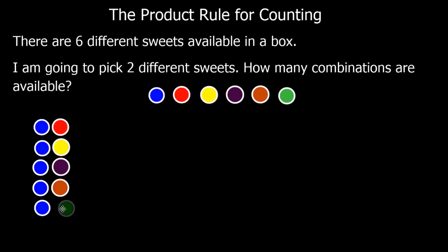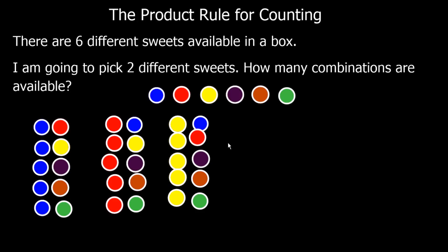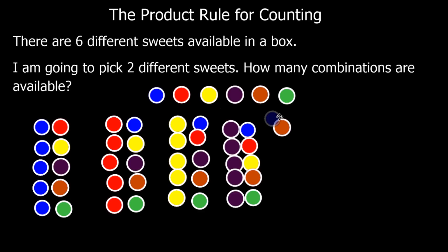I could go blue and red, I could go blue and yellow, blue and purple, blue and brown, and blue and green. Let's do the red first. I go red blue, red yellow, red purple, red brown, and red green. If it's for yellow I could go yellow blue, yellow red, yellow purple, yellow brown, and yellow green.